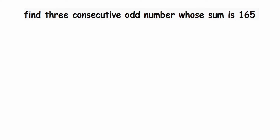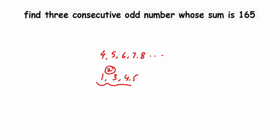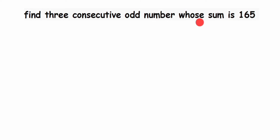Here we have an important question: find three consecutive odd numbers whose sum is 165. Consecutive numbers are those which come one after the other — the very next number. For example, starting from four, consecutive numbers are five, six, seven, eight. You cannot skip any numbers. They must come one after the other to be called consecutive.